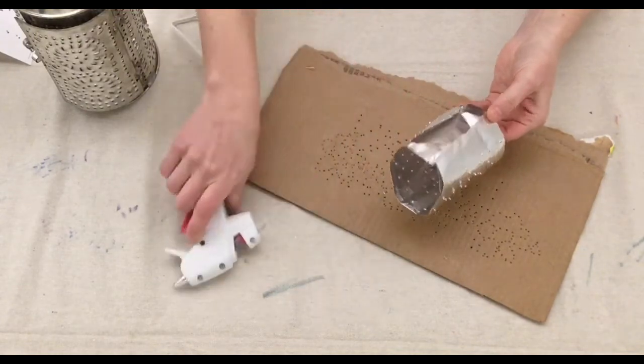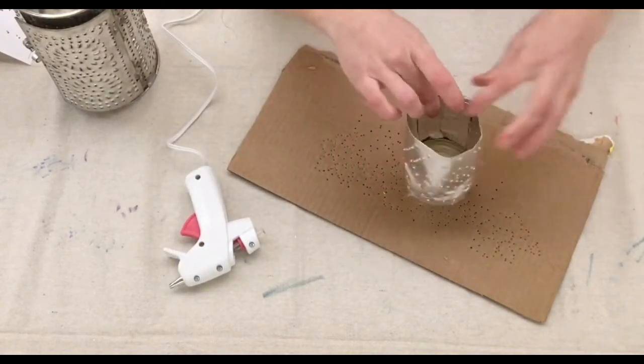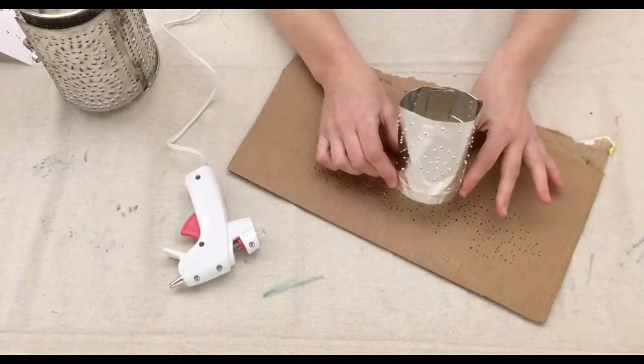Use the hot glue gun to glue the seam together. And there's the base to my punched tin lantern.